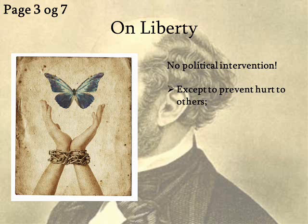The only reason you can justify political intervention, according to Mill, is to prevent other people from being hurt — to stop somebody from killing or injuring someone else. That kind of intervention is justifiable. This applies especially to punishment. Mill has interesting views about capital punishment: as a utilitarian you can't really justify killing as punishment, but for Mill, if the alternative is a lifetime of imprisonment, then killing may be preferable.